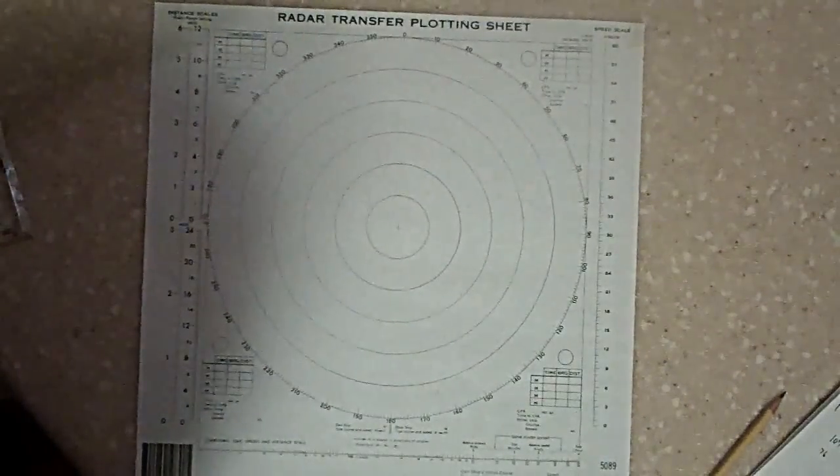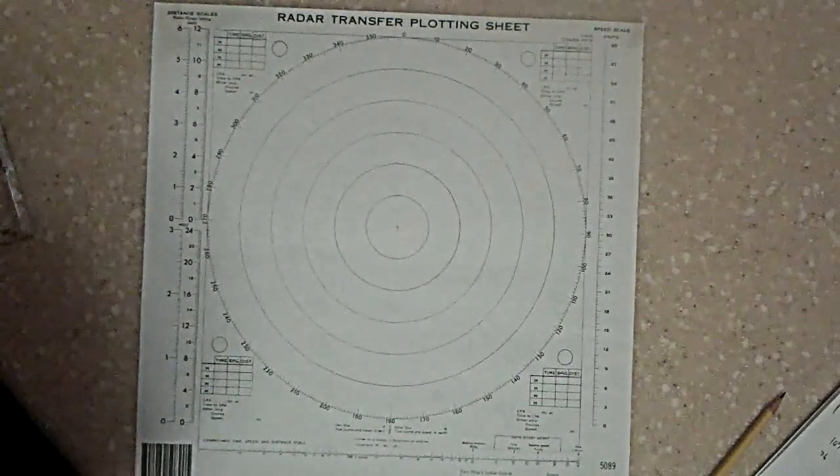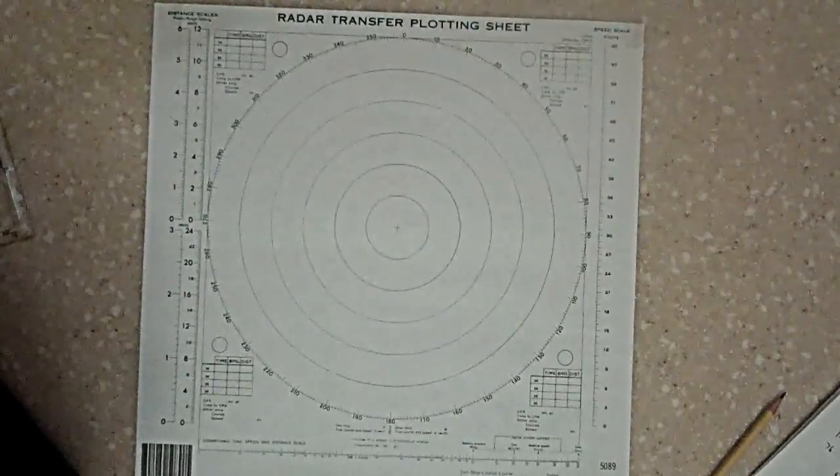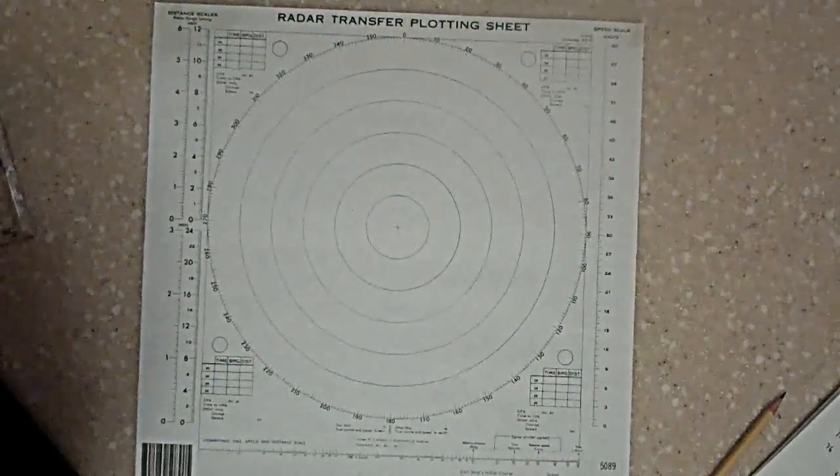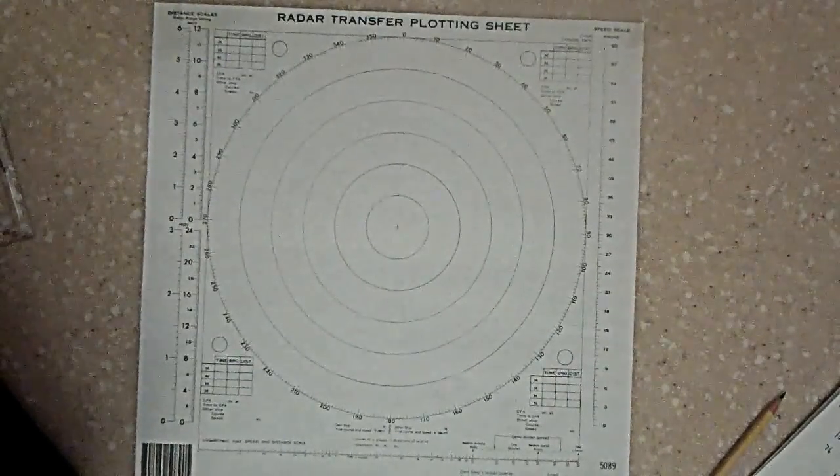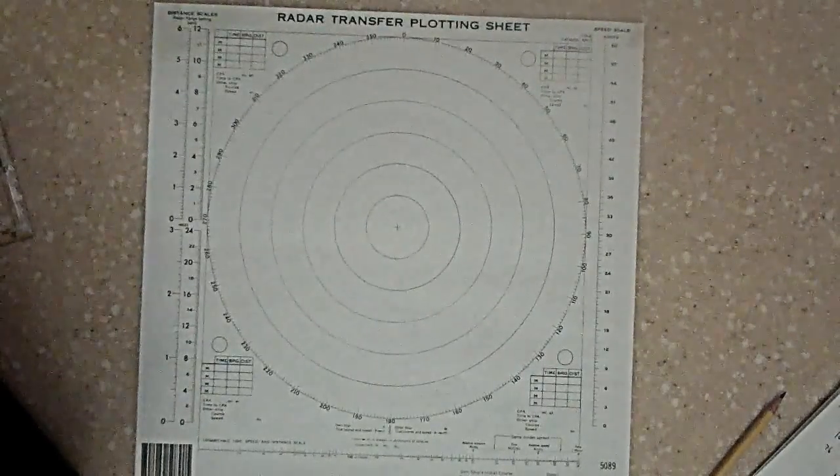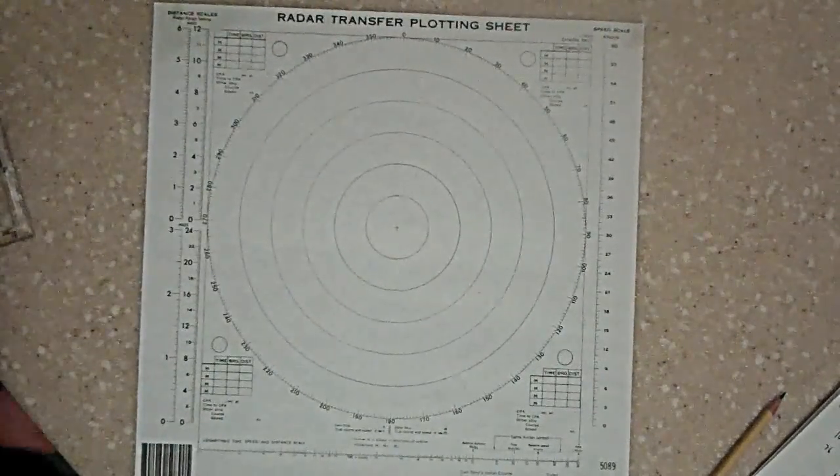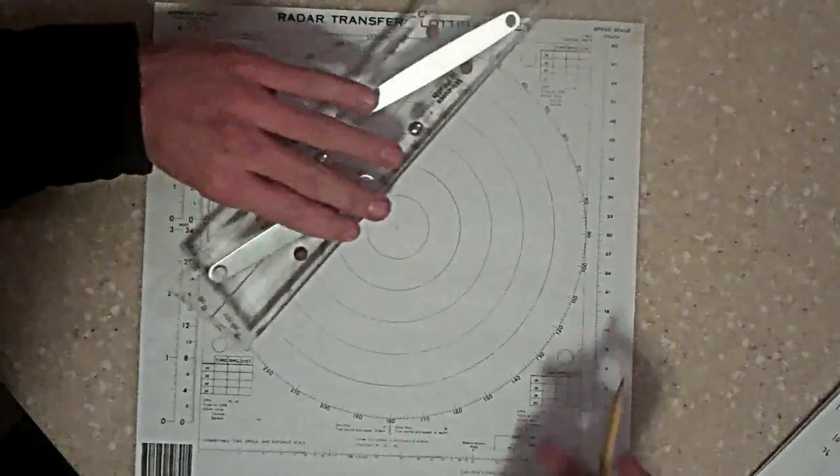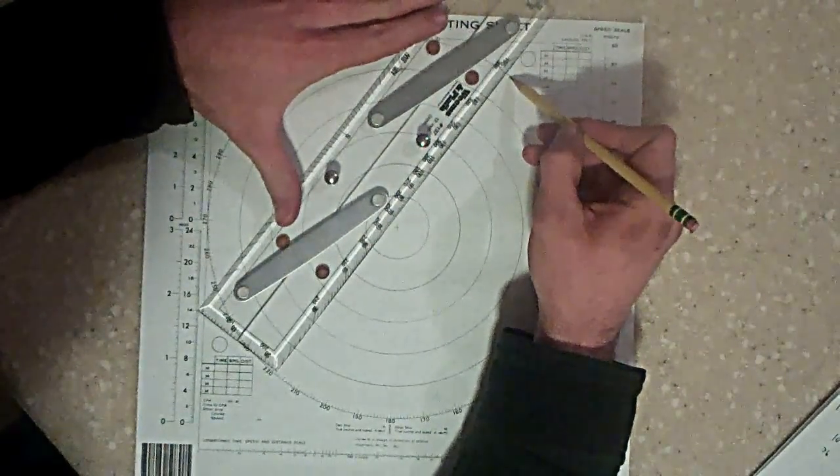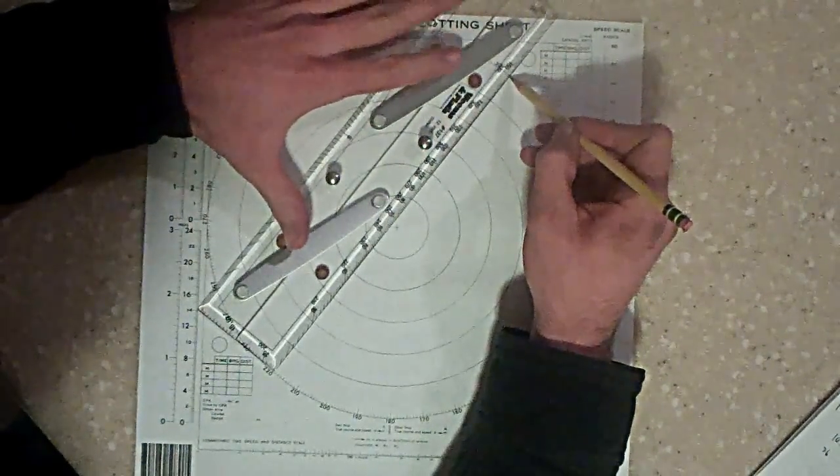So first off, the question states: You wish to make good a course of 035 degrees true, while turning for an engine speed of 12 knots. The set is 340 degrees true, and the drift is 2 knots. What course should you steer? So to start out, go ahead and mark out the course you desire to make good, which is 035.